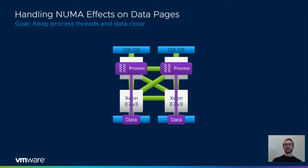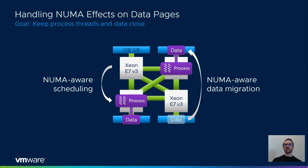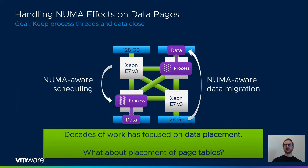There are two main techniques to reduce the NUMA effects on memory accesses in this type of machine architecture. First, there is NUMA-aware scheduling which moves the process closer to where its data resides. Secondly, NUMA-aware data migration moves data from a farther away memory node to a memory node closer to where the process is running. There is a large amount of related work investigating the allocation and scheduling policies for those NUMA machines, all primarily focusing on data placement and scheduling policy, most implemented in operating systems and hypervisors. In contrast, in our work we ask: what about the placement of the page tables themselves?